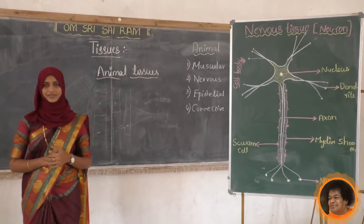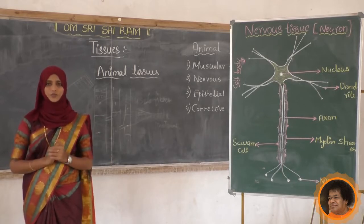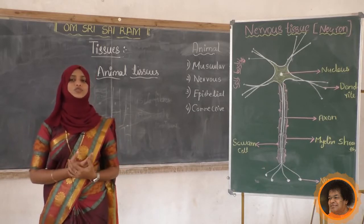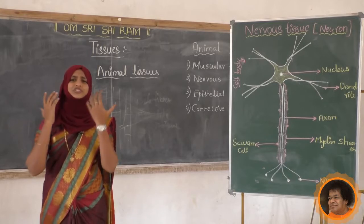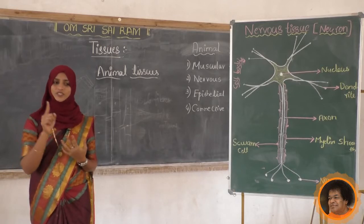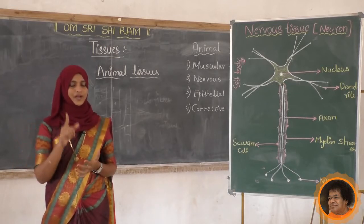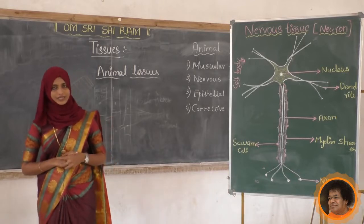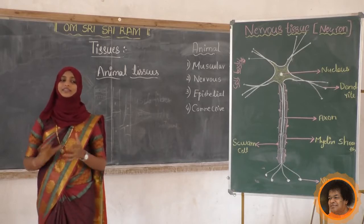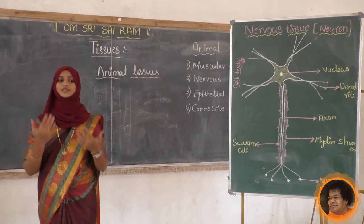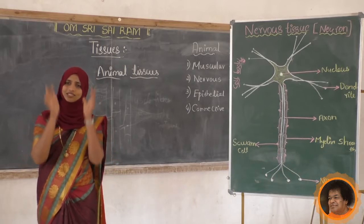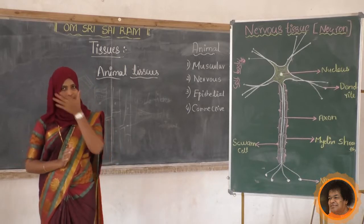Where are neurons present? They are present in the brain - you know that the brain is our supercomputer - and in the spinal cord. The spinal cord is very important for responding to stimuli. Neurons are present throughout the entire nervous system. The entire nervous system is composed of neurons.